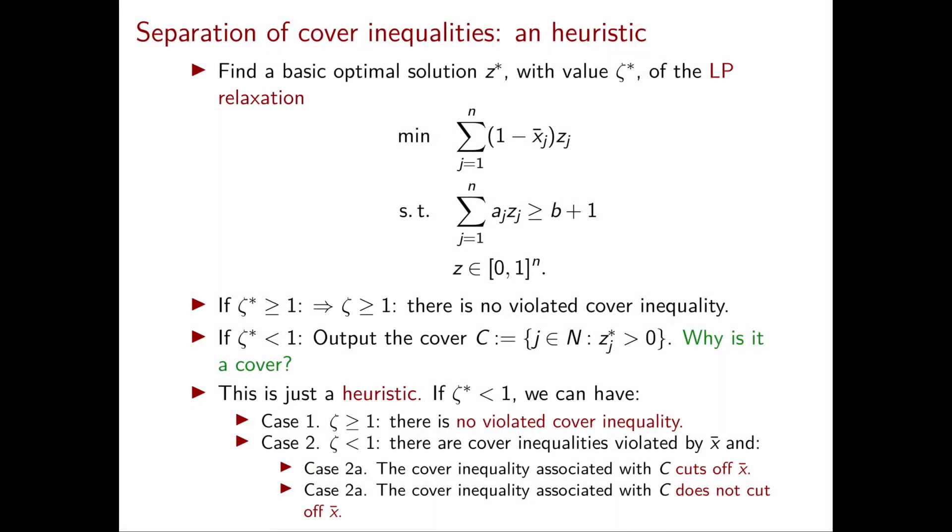Obviously, because ζ is the optimal value of the same objective function over a smaller set, and we're minimizing.